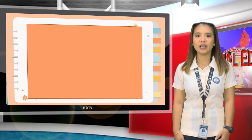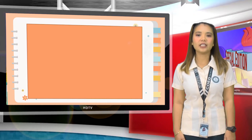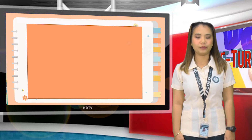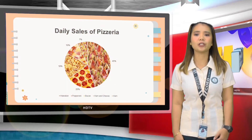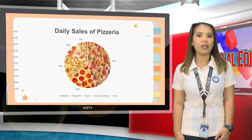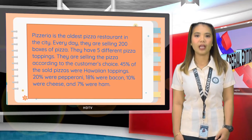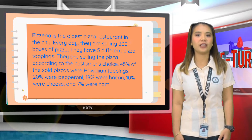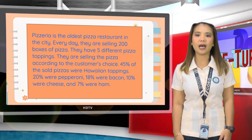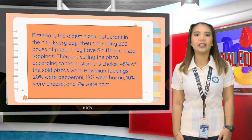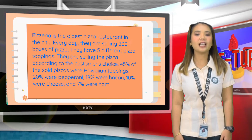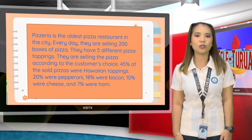Are you all done? Now let us answer the questions. First, let us read the word problem. For our direction: read and analyze the pie chart below and answer the following questions. Pidseria is the oldest pizza restaurant in the city. Every day, they are selling 200 boxes of pizza. They have 5 different pizza toppings. They are selling the pizza according to the customer's choice.